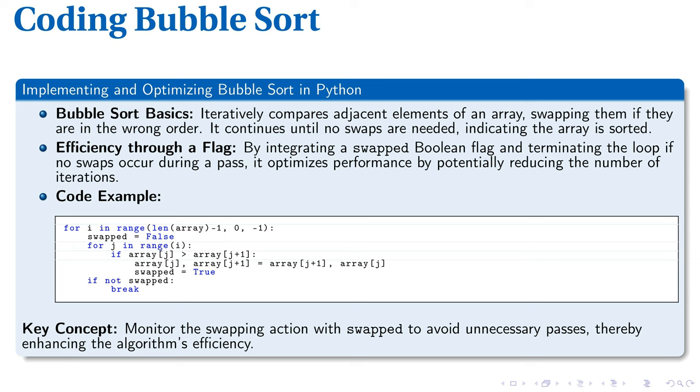Let's deconstruct our Python code. The outer loop counts downwards from the array's last index. Within, we initialize swapped as false and proceed to the inner iterations. Each time we encounter a higher value preceding a lower value, we swap them, simultaneously updating swapped to true. If no switches occur in a pass, swapped remains false, breaking the loop.